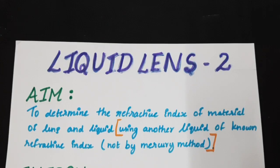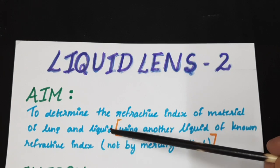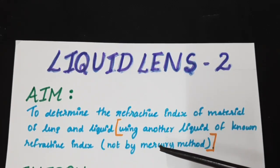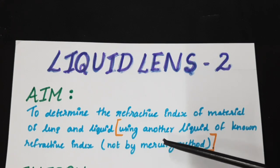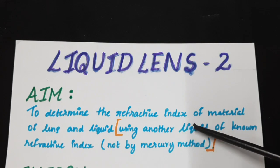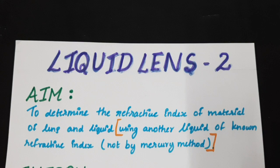The aim of this experiment is to determine the refractive index of the material of the lens and the refractive index of an unknown liquid. Here, in order to find out the radius of curvature, we are not using the mercury method or balls method, but instead making use of a liquid of known refractive index. In this experiment, the liquid of known refractive index we are taking is water, so that the refractive index can be taken as 1.33.